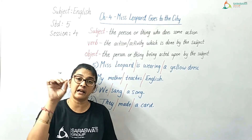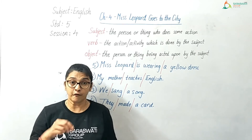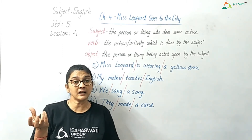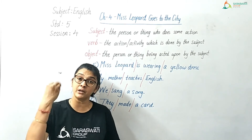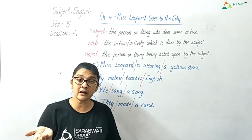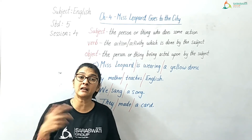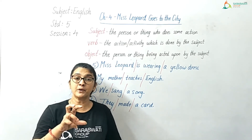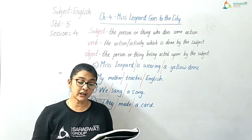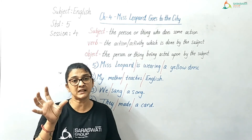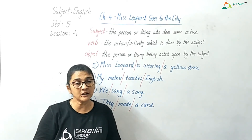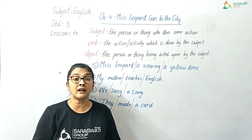For example, the poet is declaring that Miss Leppard decided to have fun — so that is a declaration ending with a full stop. Another example: she went to the city — again a simple sentence providing information, ending with a full stop. So that is a declarative sentence.